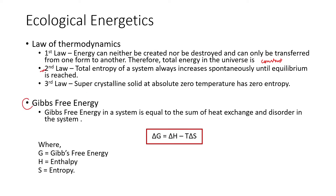When we talk about spontaneity and reactions, it is important to understand Gibbs free energy — also called available energy. Gibbs free energy tells us how much energy is available for different systems. Available energy depends on the total energy of the system, which is the enthalpy, and what the disorderedness or movement is happening inside the system. More temperature means more disorderedness.